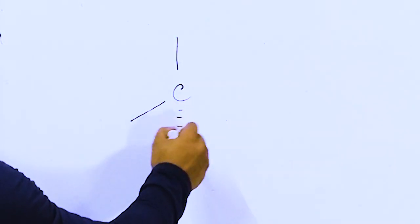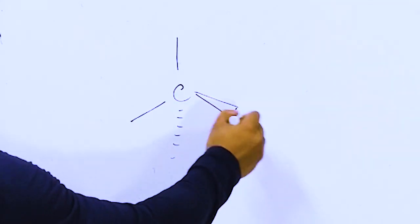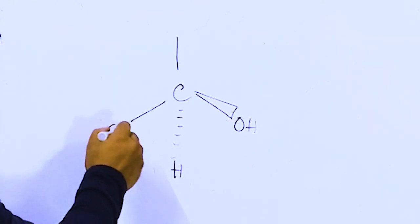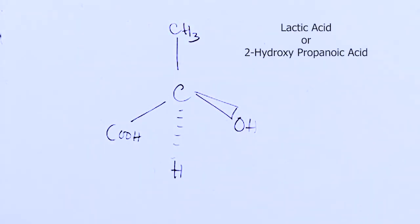For that, you need to know what a chiral center is. Chiral center means the carbon atom which has four different groups. So let's start with examples. Suppose we have lactic acid — 2-hydroxypropanoic acid.